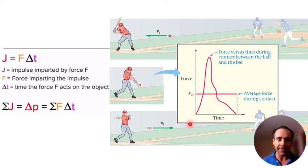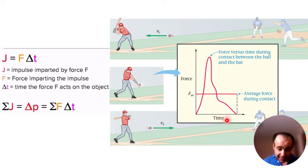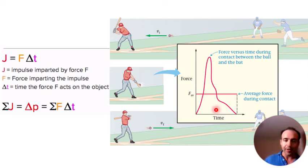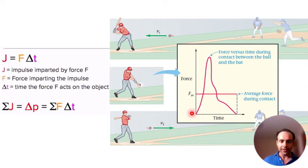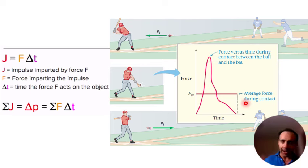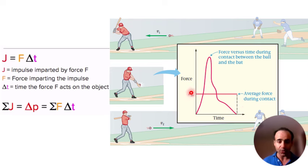This realistic parabolic curve is equivalent to a rectangle representing the average force over that delta T. This is very similar to the concept of work, where work is force times distance and had a graphical representation. Now with impulse — which is force times time — we can do the same thing.